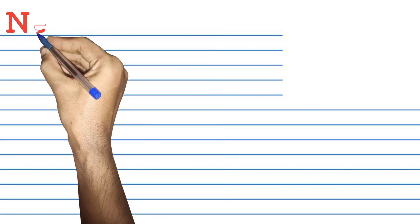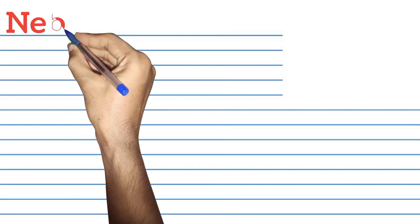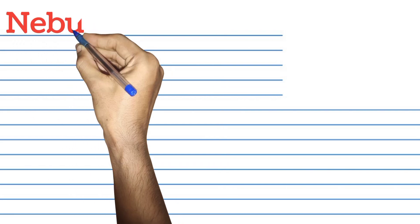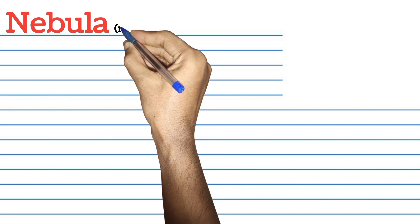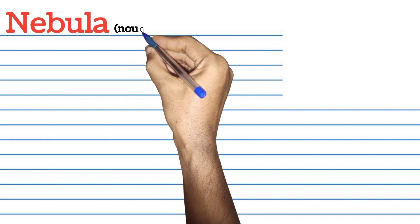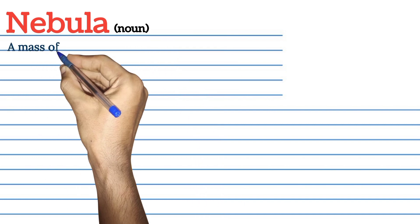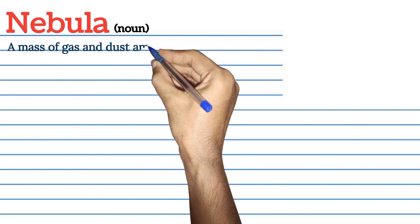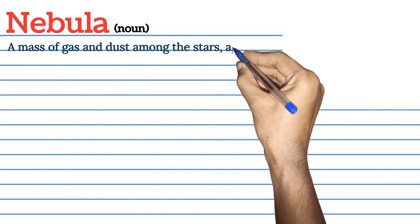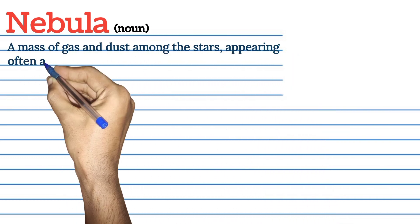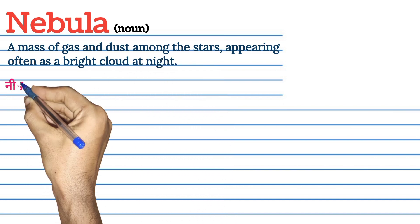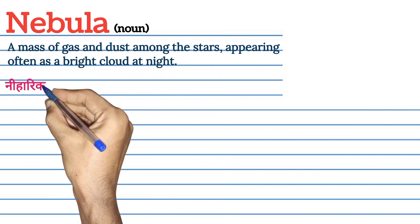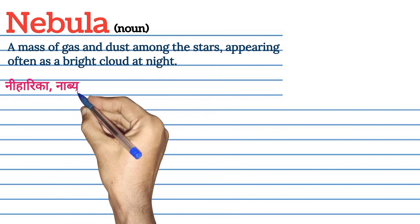Welcome to Curious Spoken English. Today's word is Nebula. Nebula ka art English mein aur Hindi mein kya hota hai is video mein samaj lete hai. Nebula ka matlab English mein: a mass of gas and dust among the stars, appearing often as a bright cloud at night.